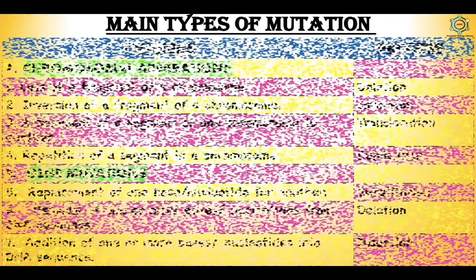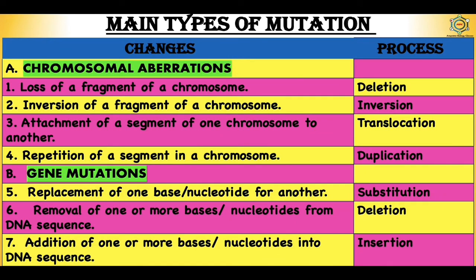In summary, the main types of mutations: chromosomal aberrations include deletion (loss of a fragment), inversion (change of direction of a segment), translocation (attachment of a segment of one chromosome to another), and duplication (repetition of a segment). Gene mutations include substitution (replacement of one base or nucleotide with another), deletion (removal of one or more bases from the DNA sequence), and insertion (addition of one or more bases into the DNA sequence). These are the seven main types — four chromosomal and three gene mutations.